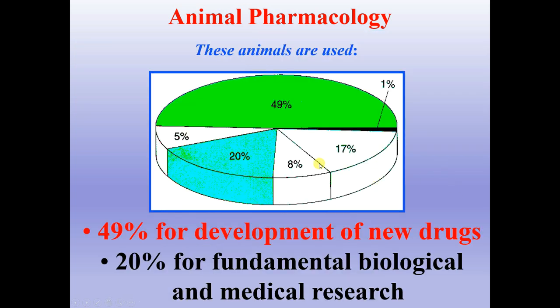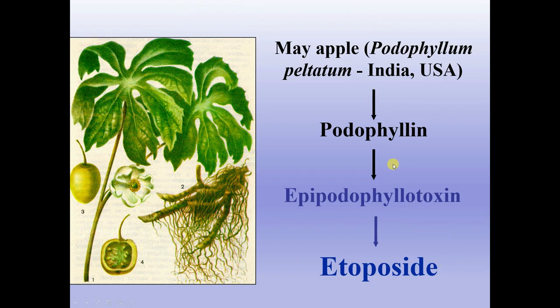Of that percentage, 49% were used for development of new drugs and around 20% for fundamental biological and medical research. As an example, from the May apple plant (Podophyllum peltatum, from India and USA), first podophyllin was discovered, then epipodophyllotoxin, and as a result the drug etoposide.